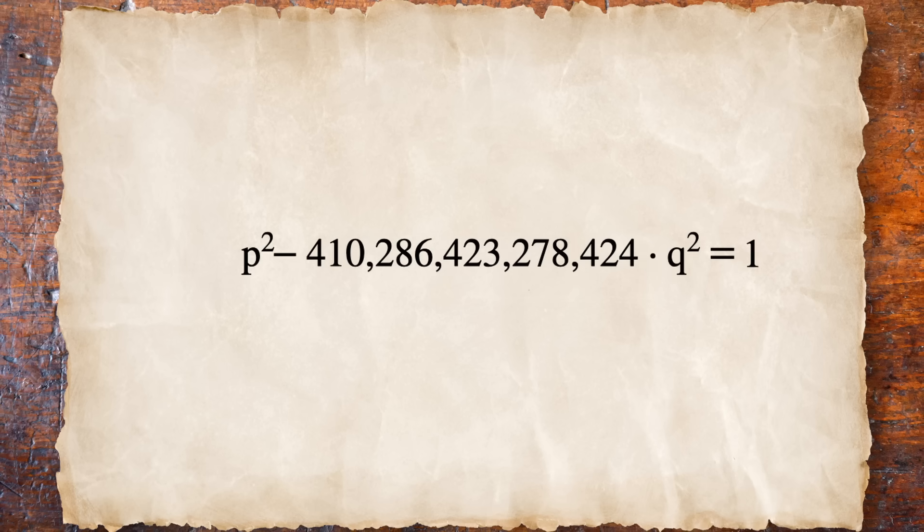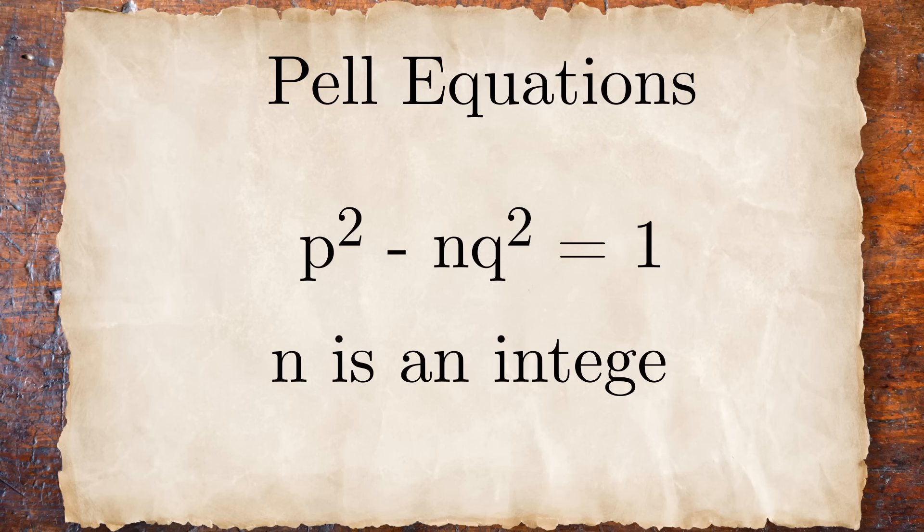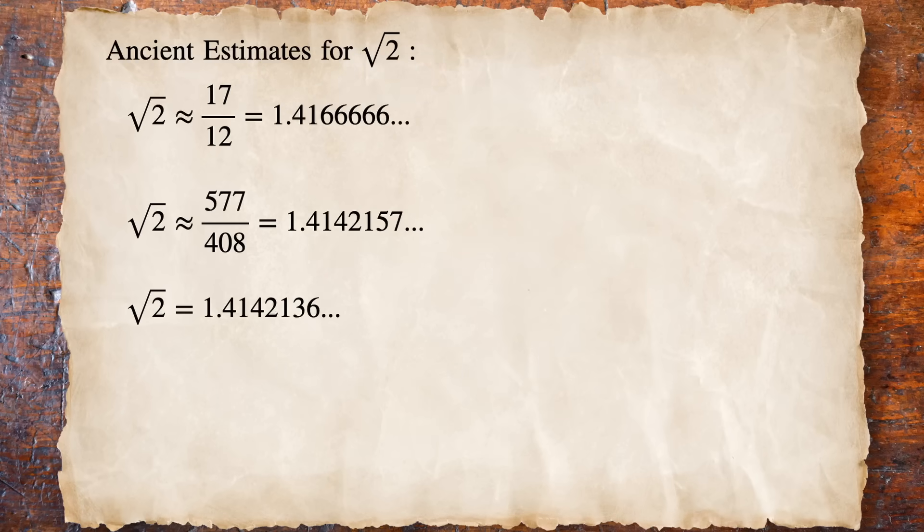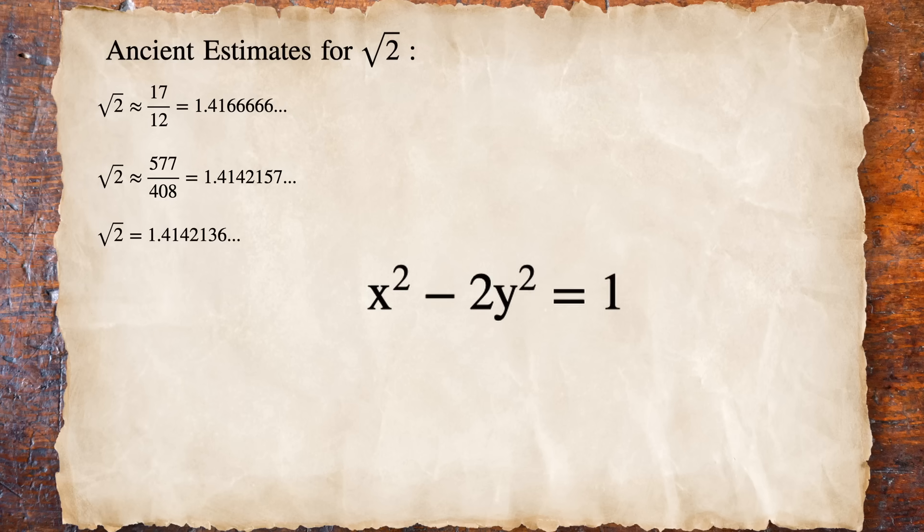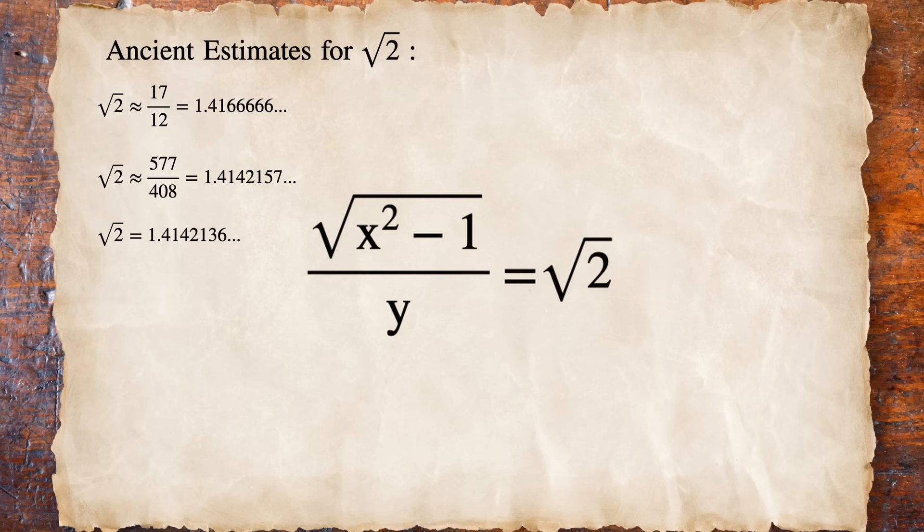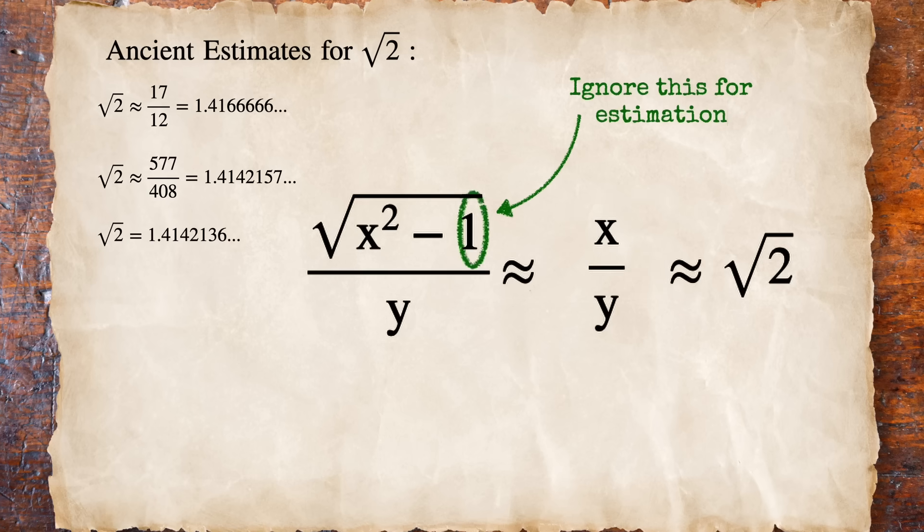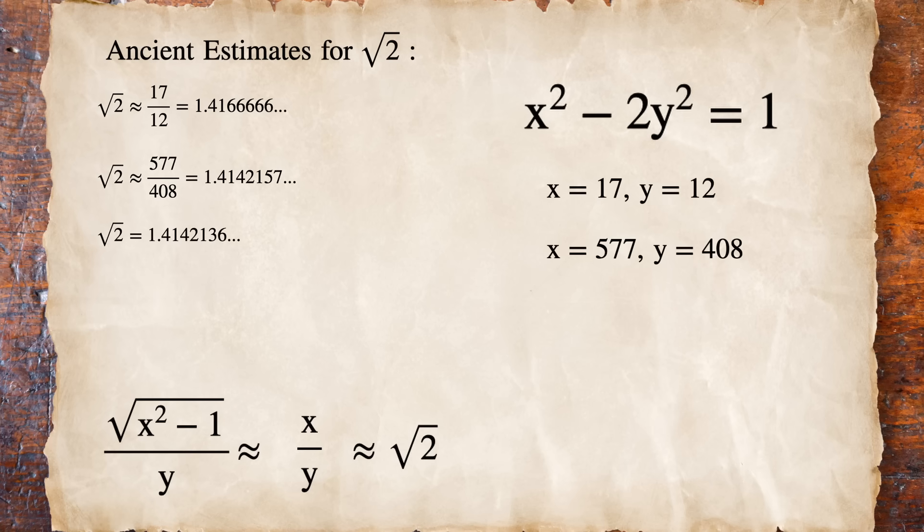This gives us an example of what's known in number theory as a Pell equation. By the time the cattle problem was written, Greek and Indian mathematicians had been studying this type of equation for a couple hundred years already, and they'd used it to do things like approximate the square root of 2. Since the equation x squared minus 2y squared equals 1 can be rearranged like this, any whole number solutions for x and y give us a fraction that's really close to the square root of 2 when we estimate by ignoring that 1 in the numerator. The bigger the pair of numbers we find, the better the approximation.